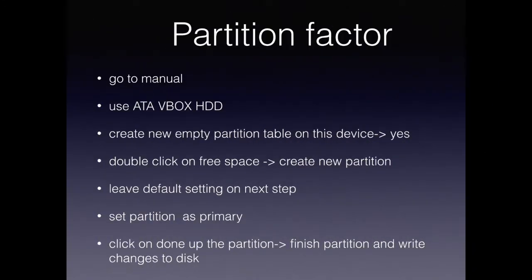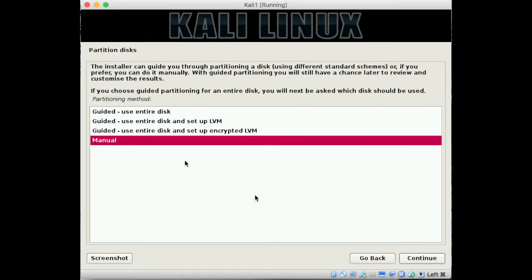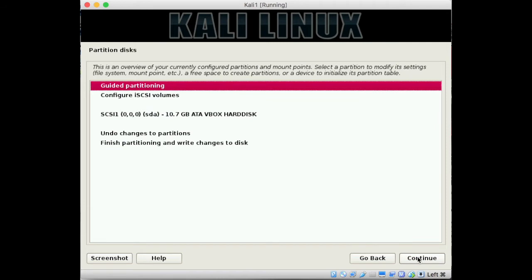Next is the partition setup. We have to go with the manual process, because in Google Cloud they do not need a swap partition. We have to eliminate the swap partition and select everything on a primary partition. Be very sure to follow this mechanism, otherwise it will throw an error when you upload the operating system to Google Cloud. On the partition window, select the manual option and hit the continue button.